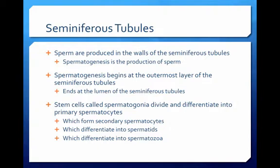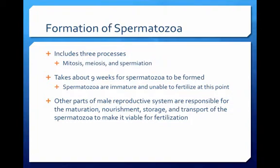During this process, stem cells called spermatogonia in the outermost layer divide and differentiate into primary spermatocytes, which form secondary spermatocytes, which differentiate into spermatids. Finally, spermatids differentiate into spermatozoa in the layer of the seminiferous tubule closest to the lumen and will be released into the fluid of the lumen. Spermatogenesis includes three processes called mitosis, meiosis, and spermiation, a topic for a future module. It takes about nine weeks for the spermatozoa to be formed and released into the lumen of the seminiferous tubules.